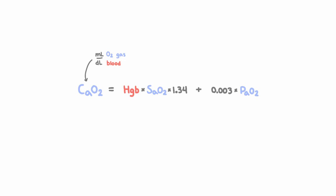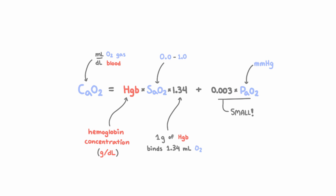Here, Hgb is the hemoglobin concentration in grams per deciliter, and this 1.34 signifies that one gram of hemoglobin can bind a maximum of 1.34 milliliters of oxygen. SAO2 represents the proportion of available hemoglobin binding sites that are bound to oxygen, expressed as a decimal between zero and 1.0. PaO2 is measured in millimeters of mercury. Note that this second term, the oxygen dissolved within the blood, constitutes a very small fraction of the total content.